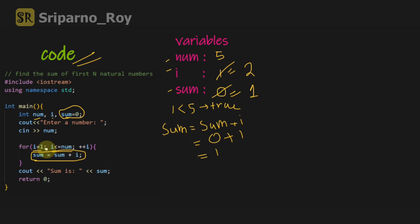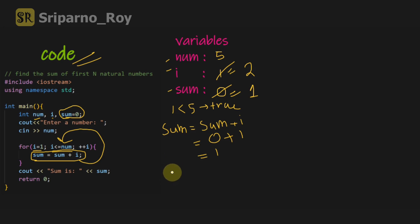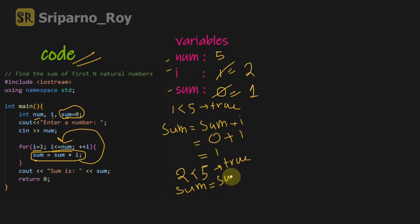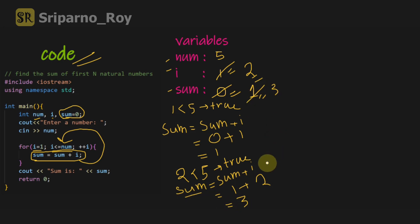We update plus plus i to increase i by 1, so now sum is 1 and i equals 2. It checks the condition again: i less than or equals to num. Now i is 2 and num is 5, so 2 is less than 5 — the condition is true. It executes sum equals to sum plus i again. Now sum is 1 and i is 2, so the new sum is 1 plus 2 equals 3.